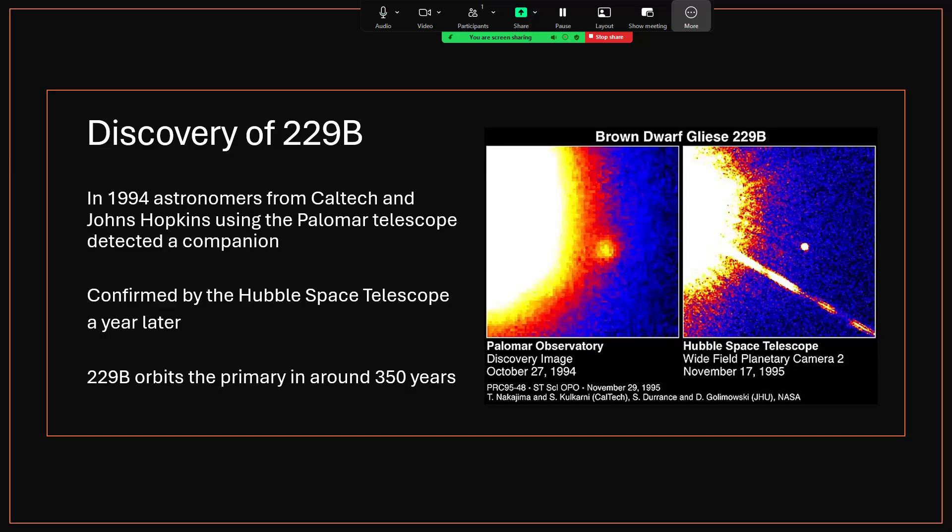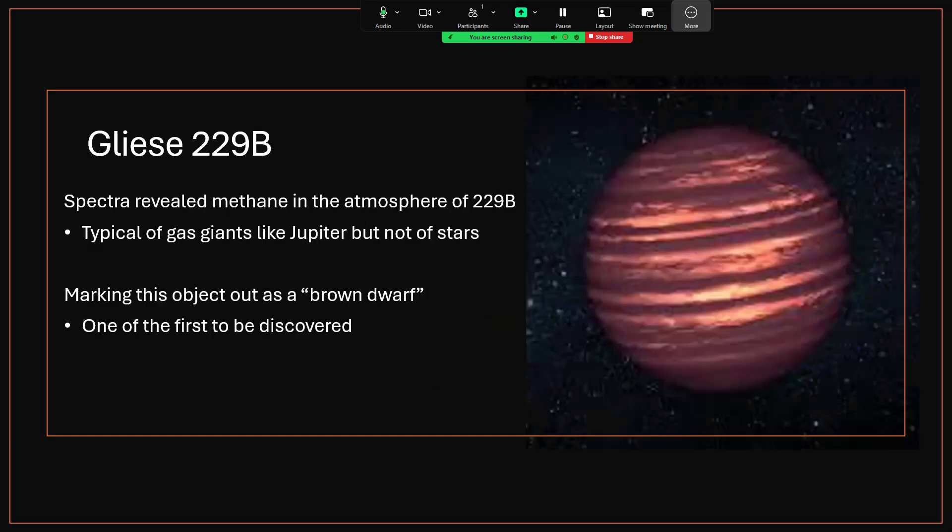This is an object that is orbiting around the main star in a period of 350 years. From these initial measurements and spectra of the surface from the light reflected from the primary, we were able to determine that there was methane in the atmosphere. And methane in the atmosphere is typical of things like Jupiter, gas giant planets, but you don't tend to find it in the outer layers of stars. So this is not a star and is perhaps a giant planet or more likely a brown dwarf.